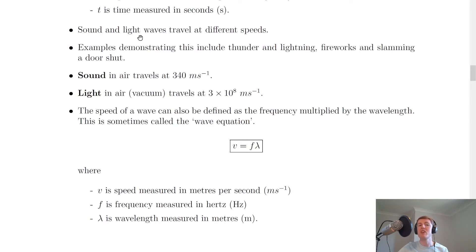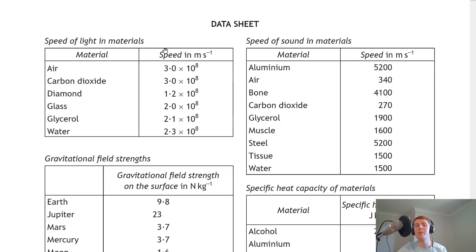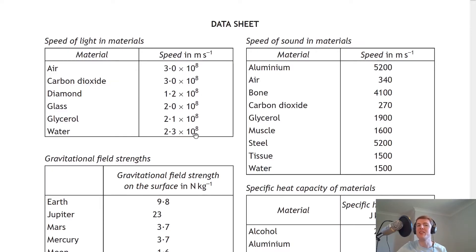Sound and light waves travel at different speeds — one travels much faster than the other — and it depends on what material the sound or light is moving through. You can see this in the first two tables on the data sheet in the exam. The speed of light in air is 3.0×10⁸ m/s, in glass it's 2.0×10⁸ m/s, and in water it's 2.3×10⁸ m/s. So light travels slower in water and in glass than it does in air.